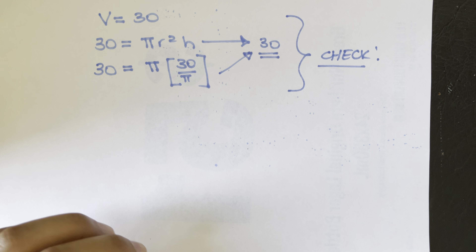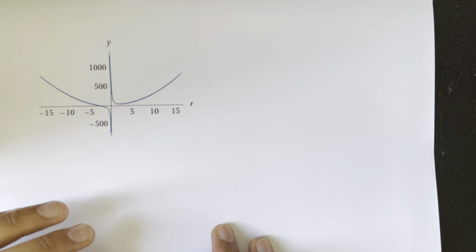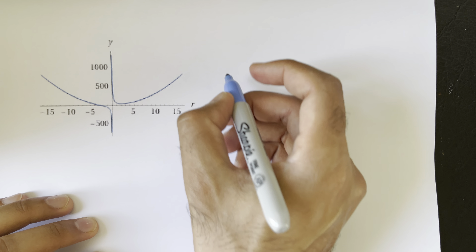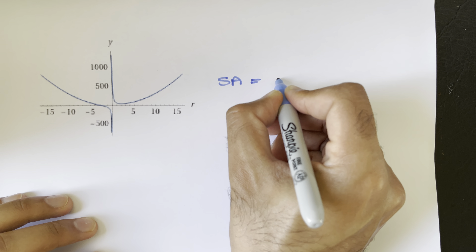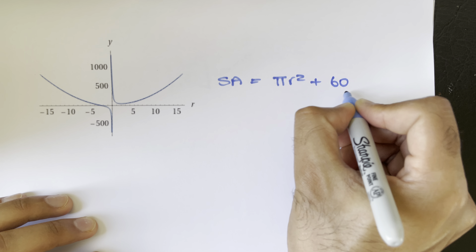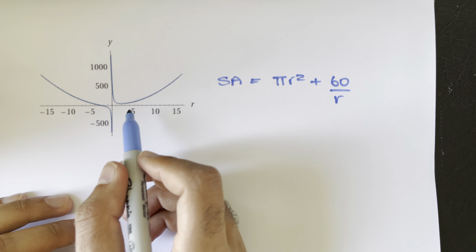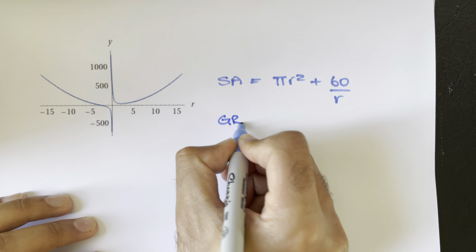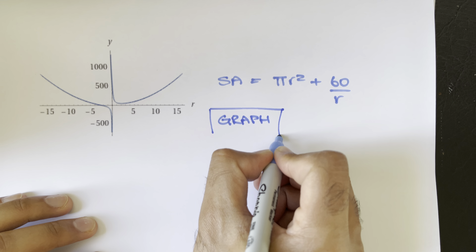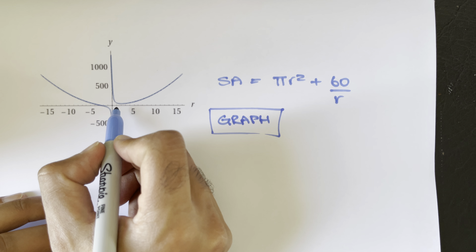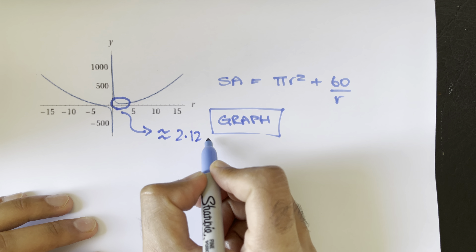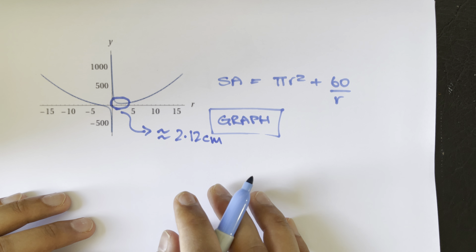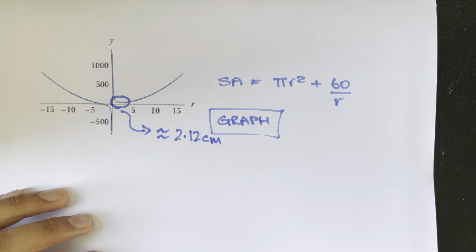Another way to check is to graph the surface area function SA = πr² + 60/r. From optimization we look for the minimum, and the graph confirms the minimum occurs at approximately r = 2.12 centimeters. That is where the minimum surface area occurs, confirming our answer.